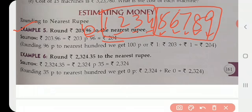So when we are saying that in the second example it is ₹2324.35, so 35 paisa is not nearing 100 paisa, so nothing will be added to it. The answer will be only ₹2324 and no paisa. That is an approximation.